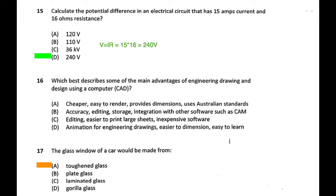Question 17: windshields are made of laminated glass - if you hit them with a sledgehammer they dent and leave marks but don't shatter. Side windows, however, are toughened glass: hit them and they smash into thousands of tiny safe pieces. That shattering into small safe pieces is what we call toughened glass.